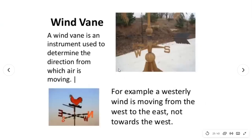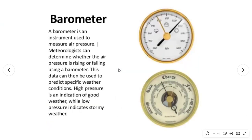A wind vane is an instrument used to determine the direction from which air is moving. For example, a westerly wind is moving from west to east — keep that in mind as it is usually tested. A barometer is an instrument used to measure air pressure. Meteorologists can determine whether air pressure is rising or falling, and use this data to predict specific weather conditions. High pressure indicates good weather; low pressure indicates stormy weather.